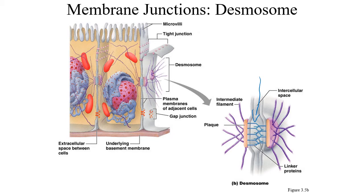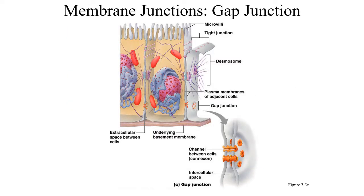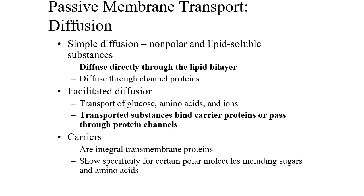Desmosomes can be utilized throughout the body, with intermediate filaments of the cytoskeleton extending from them. Gap junctions have pores that allow one cell to transmit substances to the next cell — moving things like sodium, potassium, and calcium from one cell to another.